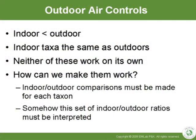Outdoor air controls can be used in a number of ways. You can look at the indoor compared to the outdoor and say that if the indoor is less than the outdoor, then the building is okay. If it's greater than outdoors, then it's not okay. So if you're thinking in terms of ratios, you would say if the ratio is less than one, then the indoor environment is not a problem; if it's greater than one, then it is a problem. Now, it's a very simplistic approach, but many people do use that method.